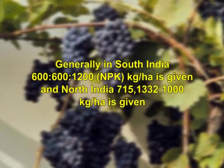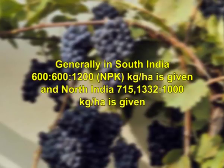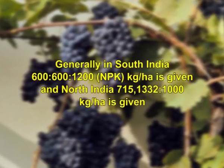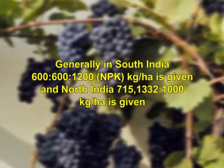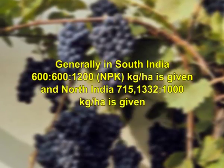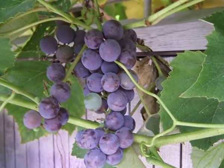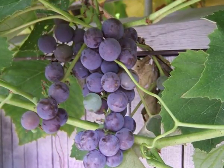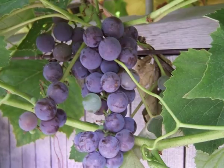Regarding nutrition, generally in South India, NPK doses of 600, 600, and 1100 kg per hectare are given, while in North India a dose of 715, 1332, and 1000 kg per hectare is given. Recommended nutrient doses for different grape varieties vary from region to region.